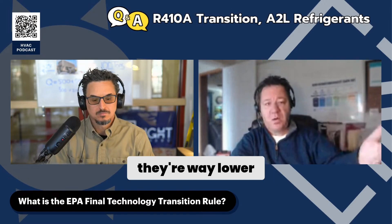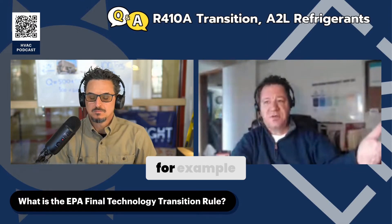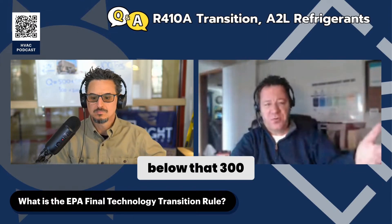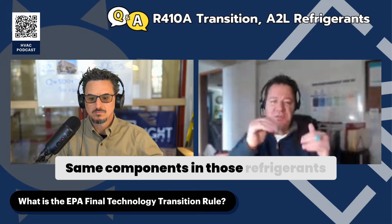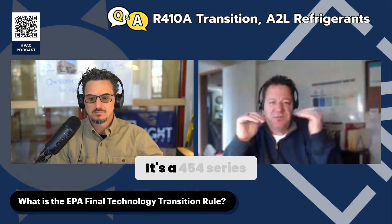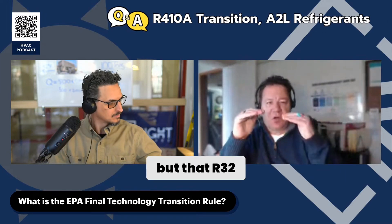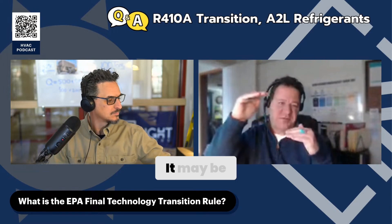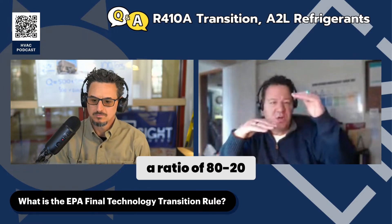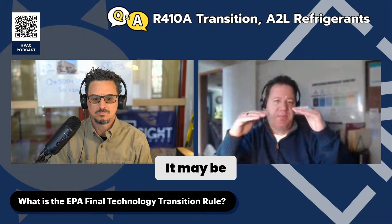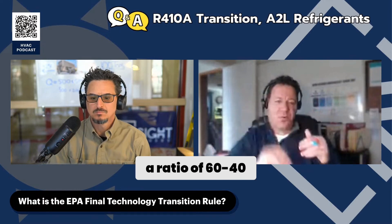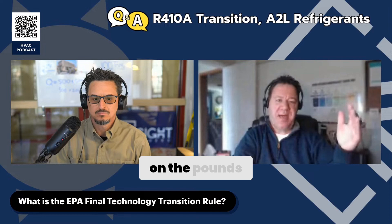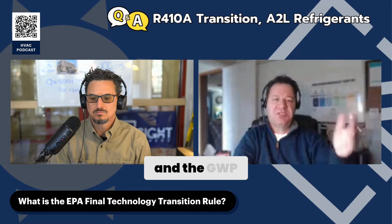When I say lower, they're way lower — 454A, for example, is 238 GWP, so it's well below the 300 limit. It's the same components in the 454 series refrigerants, but that R32 and 1234YF ratio shifts. It may be 80/20, 50/50, or 60/40. Each one can fit a different application based on the pounds and GWP requirements.